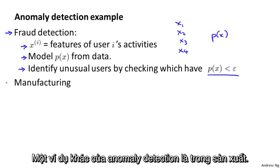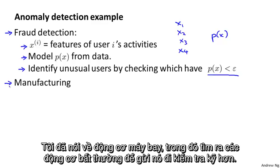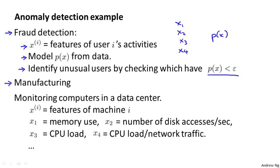Another example of anomaly detection is manufacturing. So already talked about the aircraft engine thing, where we can find unusual aircraft engines and send those for further review.